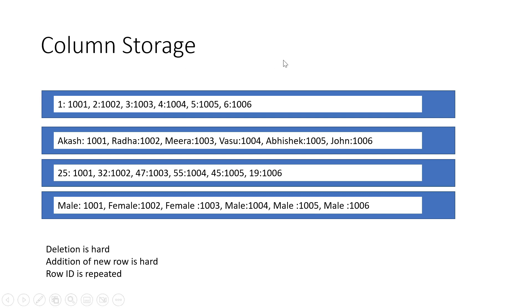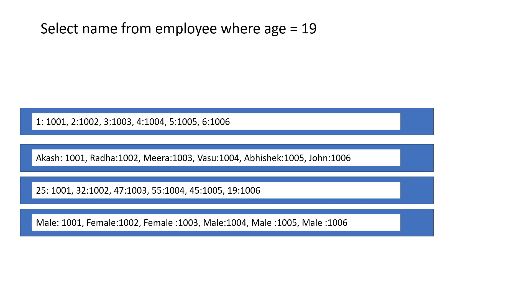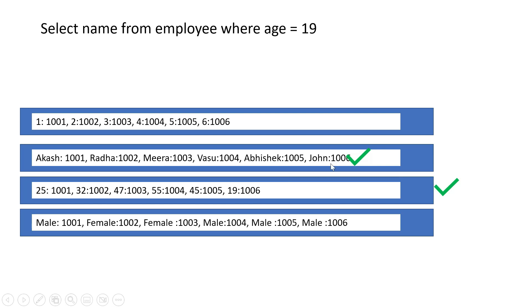Now let's look at the same queries in column-oriented storage. The first query — SELECT name FROM employee WHERE age = 19. I have to get the name but first get to age. I do one IO to the age column block and find that age 19 corresponds to row id 1006. Then I go directly to the name column block and reference row id 1006 to get the name John. So there are 2 IOs happening — one for the age block and one for the name block.